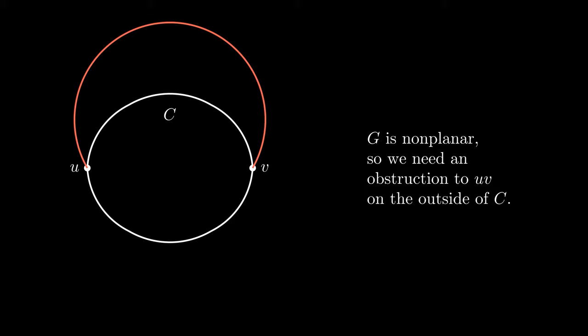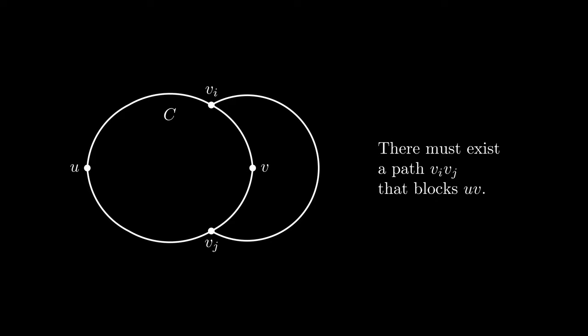Now since G is non-planar we shouldn't be able to embed uv by drawing it outside of C. So there must be a connection between two points on the upper and lower parts which we will call vi and vj. The path vi vj prevents uv from being drawn on the outside.